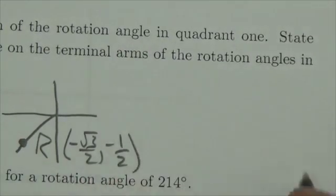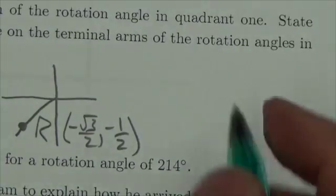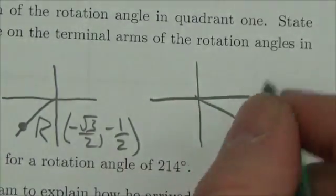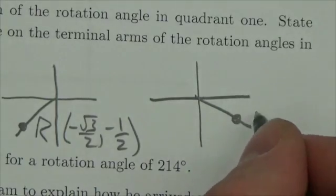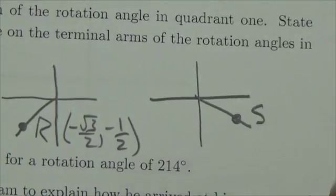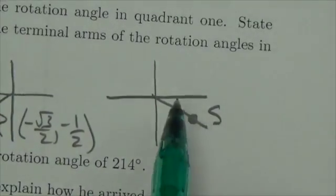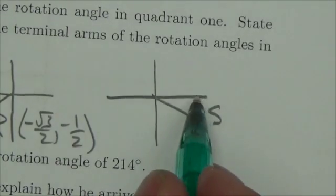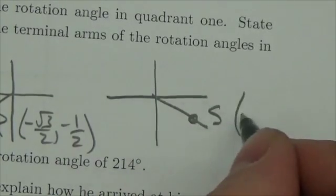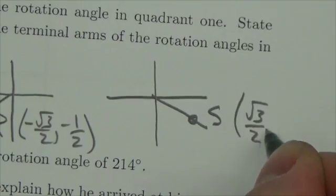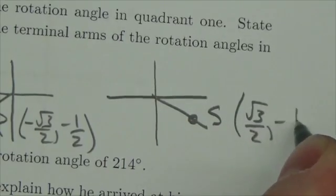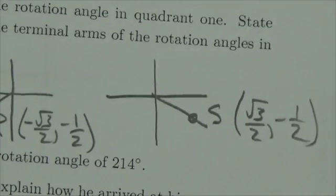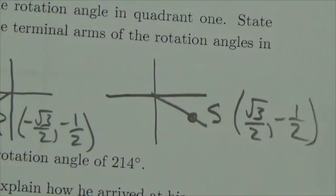If I reflect that again into the fourth quadrant, here's point S. The distances are the same, but this time I'm going root 3 over 2 positively and I'm going down, so this will be positive root 3 over 2 comma negative 1 half. And those are the coordinates of those four points.